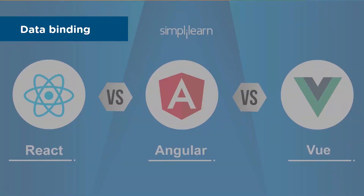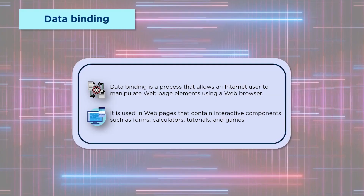Now let's talk about data binding — the core reason why we use single-page applications. Consider a scenario where you log into an e-commerce website as user 1; you should be able to see the items in your shopping cart, while user 2 would see different items in their cart. Identifying the user and retrieving data corresponding to that specific user is facilitated by data binding. Data binding is a process that allows an internet user to manipulate web page elements using a web browser.